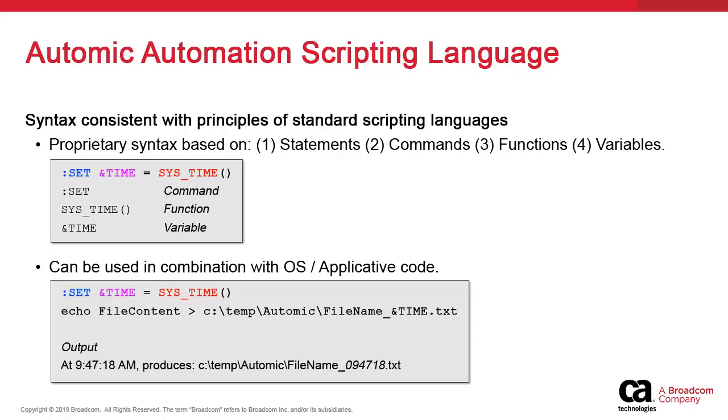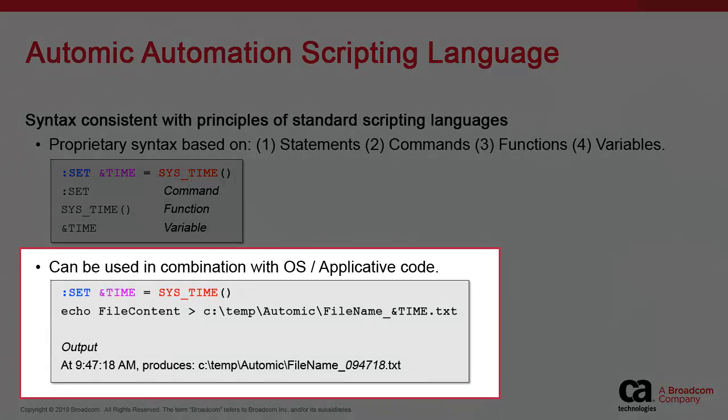When working with objects like jobs or workflows, automation scripts can be combined with scripting languages available with the system or application. You can design a script that has some AA elements and some DOS. From a technical perspective, the atomic script is interpreted first, then the other code. You can tell them apart by the fact that non-proprietary code appears in brown, and many users tend to write atomic script in uppercase, even though ultimately it is case insensitive. Note that if you define a script object, these objects will only support atomic automation scripting.